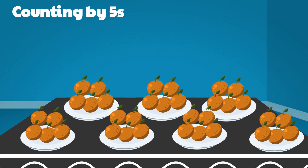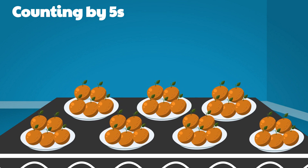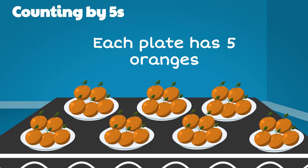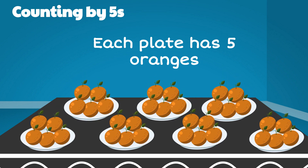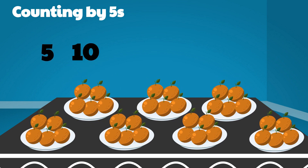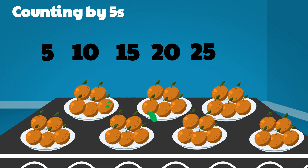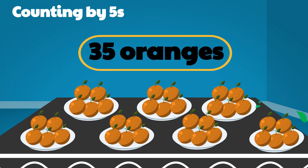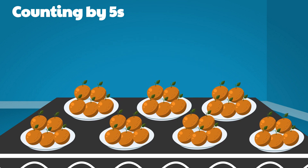Let's count the oranges here so we can see how it works. Since each plate has five oranges, we will skip count by fives: five, ten, fifteen, twenty, twenty-five, thirty, thirty-five oranges.